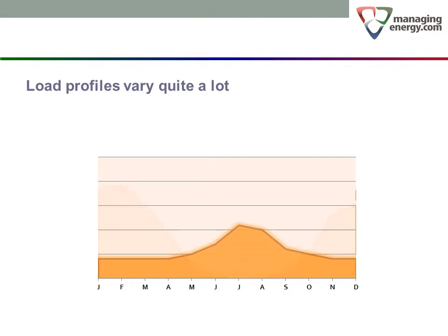Next, we can see what a cooling sensitive meter looks like. There is no space heating equipment connected. This is typical of an electric meter in a year-round building where space heating is provided by another fuel source.